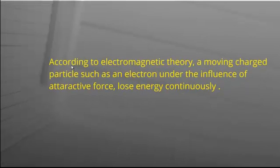According to classical electromagnetic theory, an accelerated charged particle has to radiate energy continuously. It means that electron under the influence of attractive force revolving around the nucleus with accelerated motion will lose a certain amount of energy continuously in the form of electromagnetic radiation.